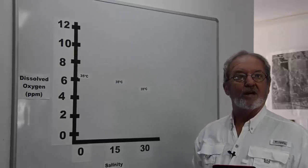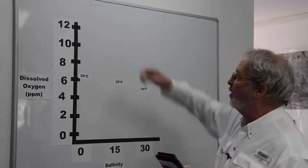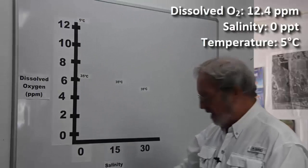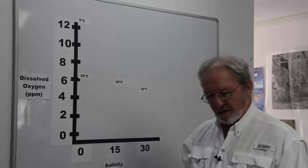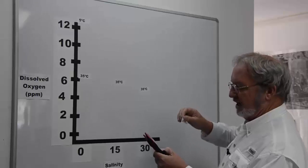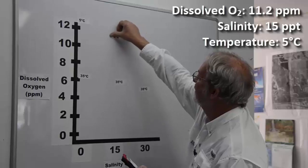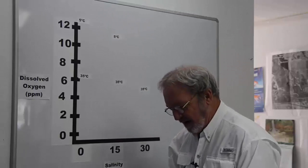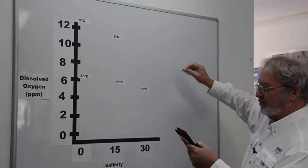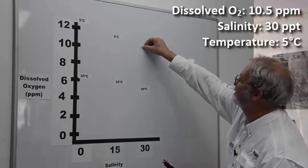Starting once again with fresh water, 0 parts per thousand, and our dissolved oxygen in parts per million was 12.4. At 15 parts per thousand or brackish water, the dissolved oxygen was 11.2 parts per million. And finally at 5 degrees centigrade and 30 parts per thousand salt water, our dissolved oxygen was 10.5 parts per million.